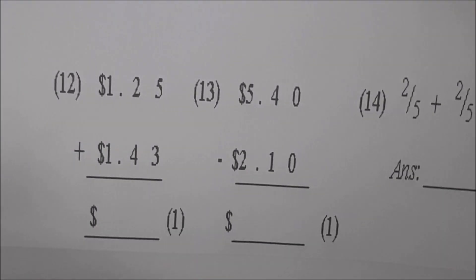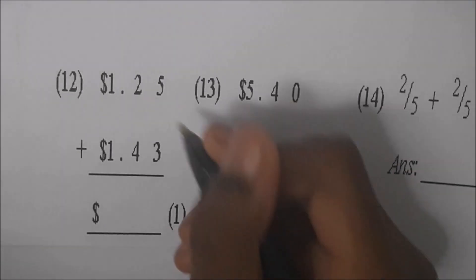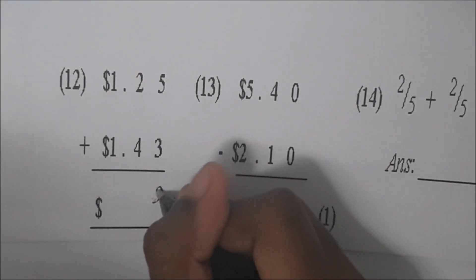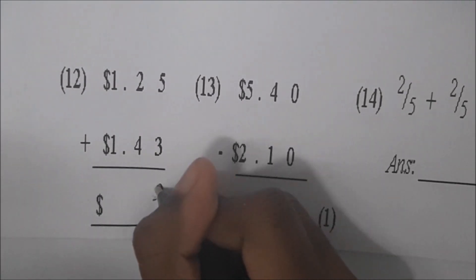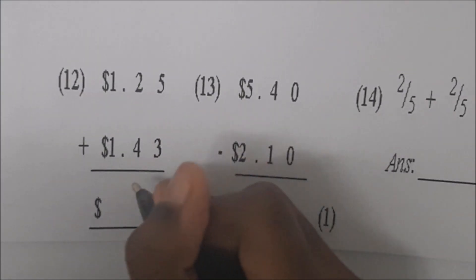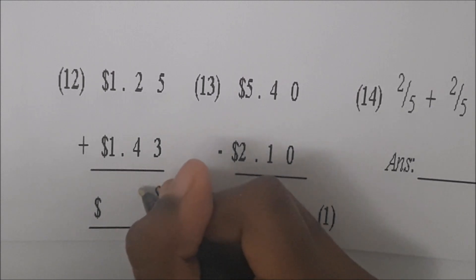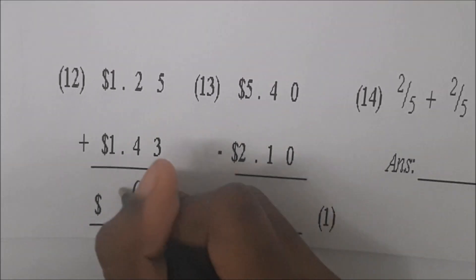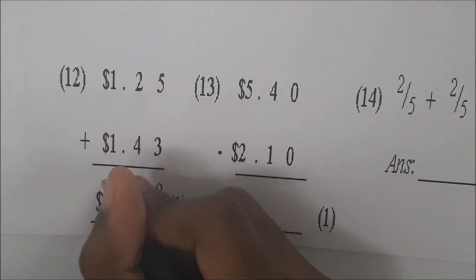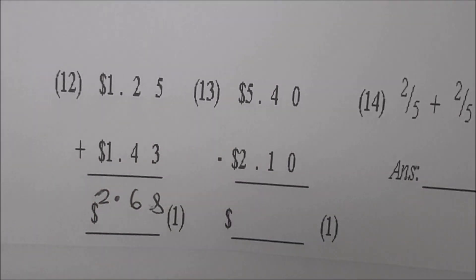Okay Sky, we're at number twelve. It's a dollar and twenty-five cents plus a dollar and forty-three cents. Go ahead and add it for us, Sky. Five and three is eight. Two plus four is six. One plus one is two. Two dollars and sixty-eight cents. Very good.